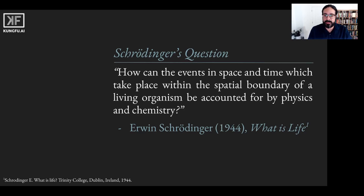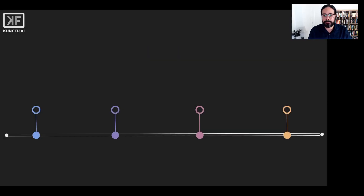Today, we are close to answering this question from the perspective of Bayesian mechanics, which integrates physics and machine learning to provide a statistical description of physical systems. Bayesian mechanics is a very new field, the term first being used in 2019. A variety of other theories paved the way to Bayesian mechanics starting, surprisingly, from the statistical analysis of brain imaging data.